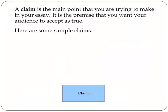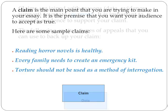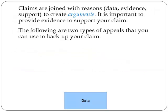A claim is the main point you're trying to make in your essay. It's the premise that you want your audience to accept. Some examples of claims would be: reading horror novels is healthy; every family needs to create an emergency kit; torture should not be used as a method of interrogation. Claims are joined with reasons, in the form of data, evidence, or support, to create arguments.